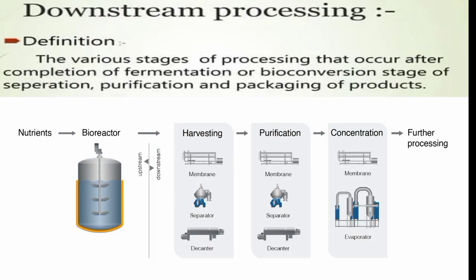Downstream processing means the various stages of processing that occur after the completion of fermentation or bioconversion — the stage of separation, purification, and packaging of products. I have the nutrients, I have the bioreactor, after this I will harvest it. For harvesting, I can use a membrane separator, a separator and a decanter. All the products will be decanted, then I go into the purification process, and then it will be concentrated by evaporation and proceed to packaging.